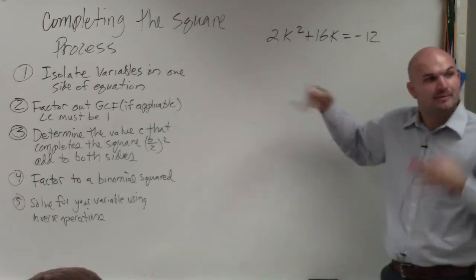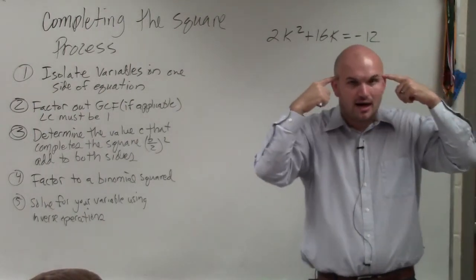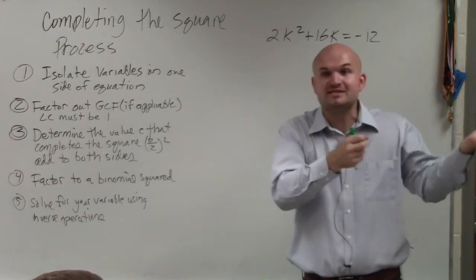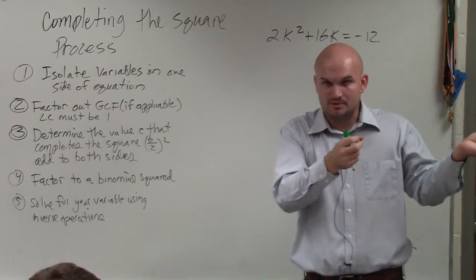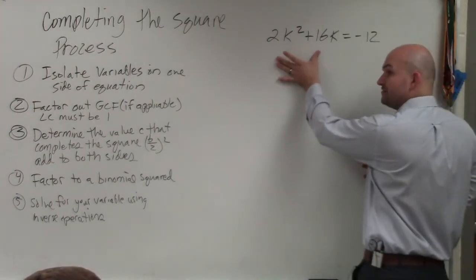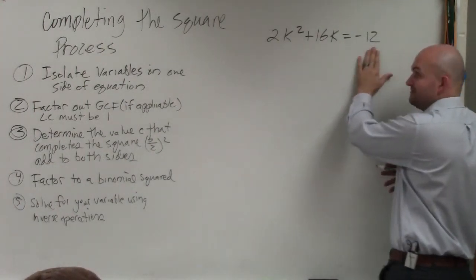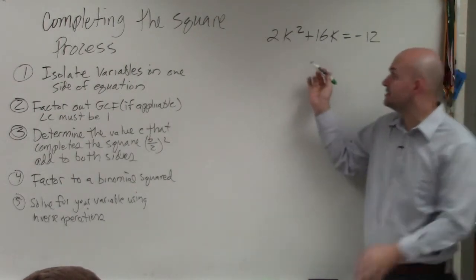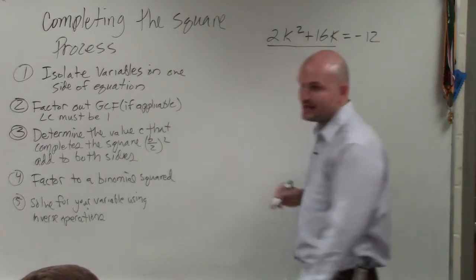So you guys see in this equation? Because remember when we were factoring, we got everything on the same side so it was set equal to 0, right? So when completing the square, what I like to do is I just like to have the variables on the side equal to a value. And the reason why I do that is we are going to create a trinomial right here.